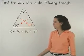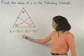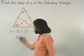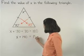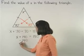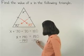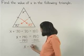Simplifying on the left side, 70 plus 70 is 140, so we have x plus 140 equals 180. And subtracting 140 from both sides, we find that x equals 40.